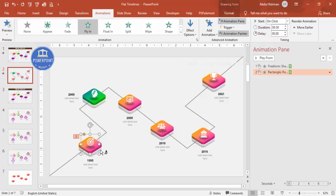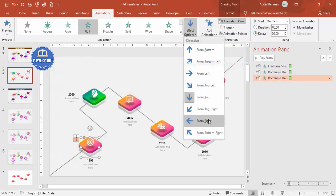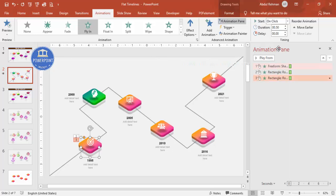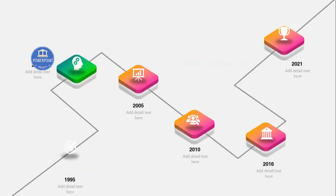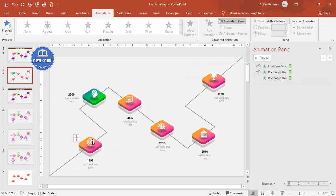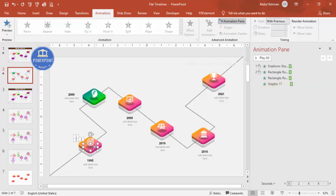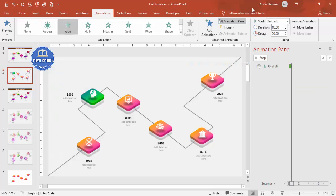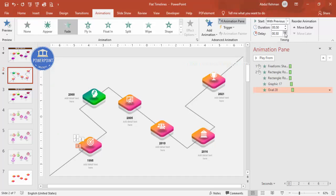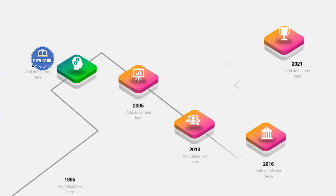Use the Animation Painter to copy this animation to the shadow shape below, but change it to come from the bottom, and set it to Start With Previous. When you play it, the first shape and its shadow come together. Then apply Fly In to the icon using Animation Painter, also set to With Previous, with a slight delay. Add a Fade animation to another element also with Previous and a small delay.